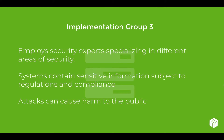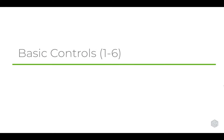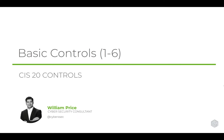In implementation group three, organizations typically employ security experts who specialize in different areas of security, so there's usually a security team, not just a single security person. Most of the time these organizations have systems that contain sensitive information subject to regulations and compliance — such as California Consumer Privacy — and attacks on these organizations can cause harm to the public. The CIS 20 controls are broken into three groups: the basics (controls one through six), the foundational, and the organizational.